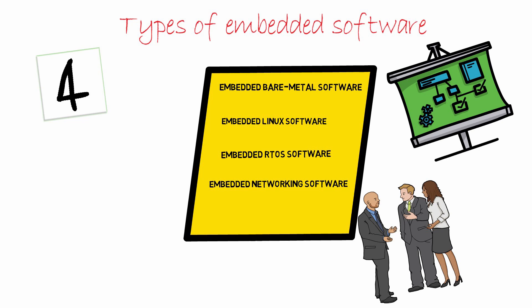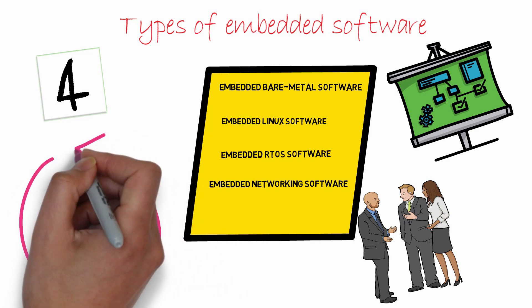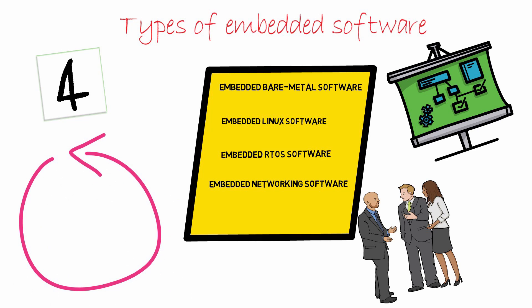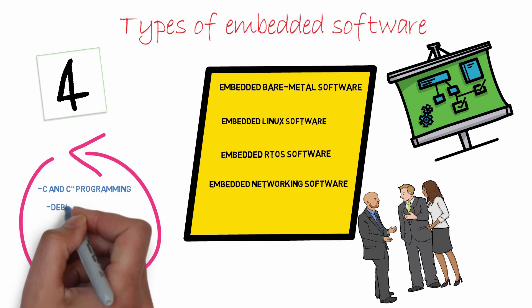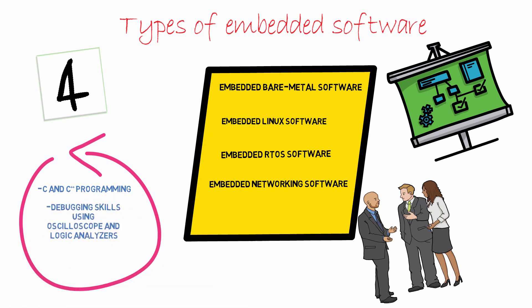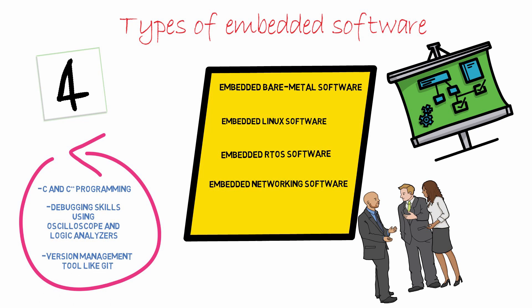Although each variety needs a unique set of skills, let's check some skills which are common in all types of embedded software: good mastery of C and C++, debugging skills using oscilloscopes and logic analyzers, and experience with version management tools like Git. Now let's take a brief look at each type of embedded software.